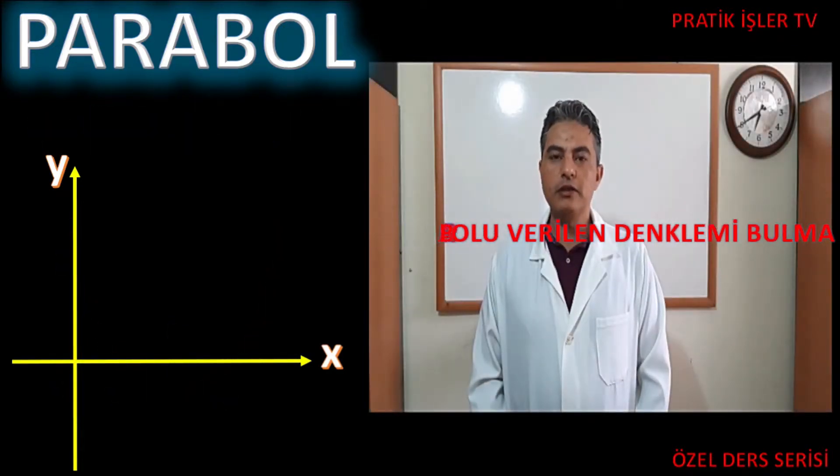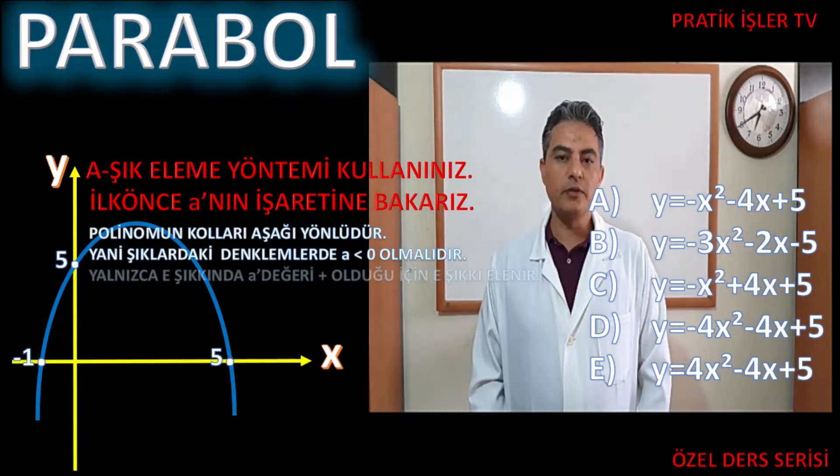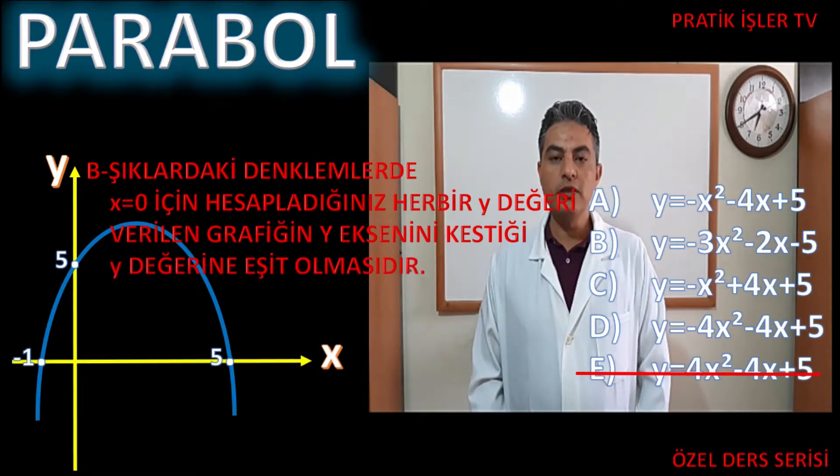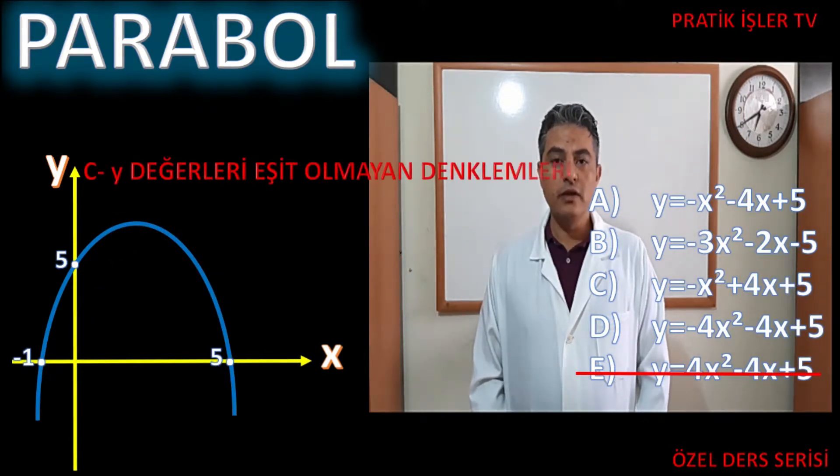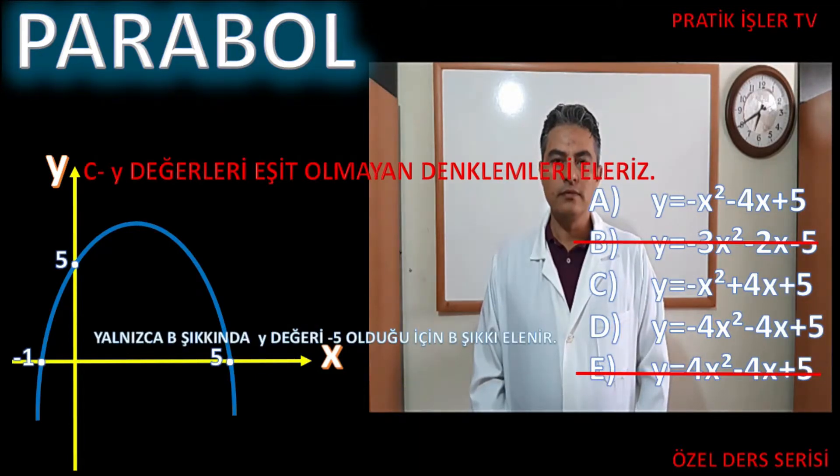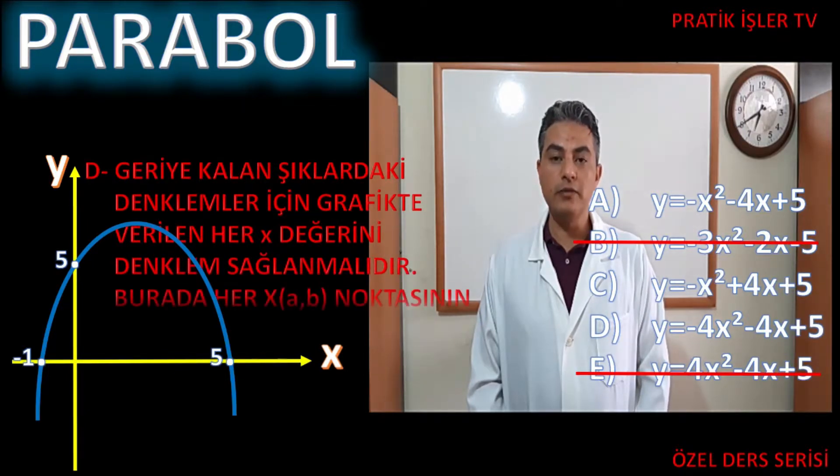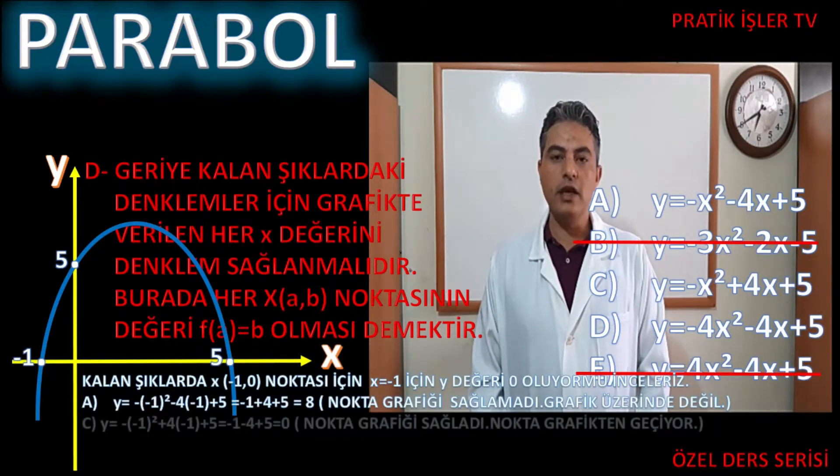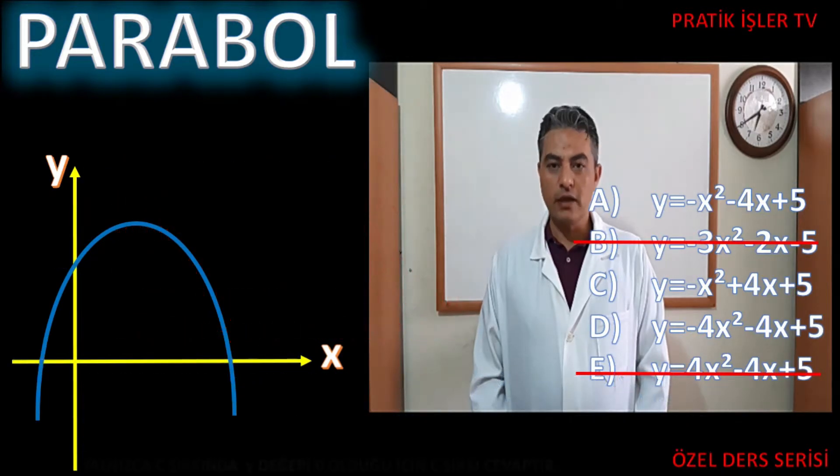Grafiği verilen parabolin denklemini bulma. Burada genellikle sorularda şıklardan gidebiliriz arkadaşlar. İlk yapmamız gereken soruda x gördüğümüz yere sıfır yazdığımızda, şekilde verilen grafikteki y noktasını tespit etmektir. Sağlamayan denklemleri eliyoruz. Sağlayan denklemler için parabol noktalardan oluşur. Yani o noktalar o parabol denklemini sağlar arkadaşlar. Örneğin soruda verilen herhangi bir noktayı seçersek, o noktanın absis değerine karşılık ordinat değerini verilen şıklardaki elimizde kalan denklemlerden biri sağlamalıdır. Sağlamayan denklemi eliyoruz.